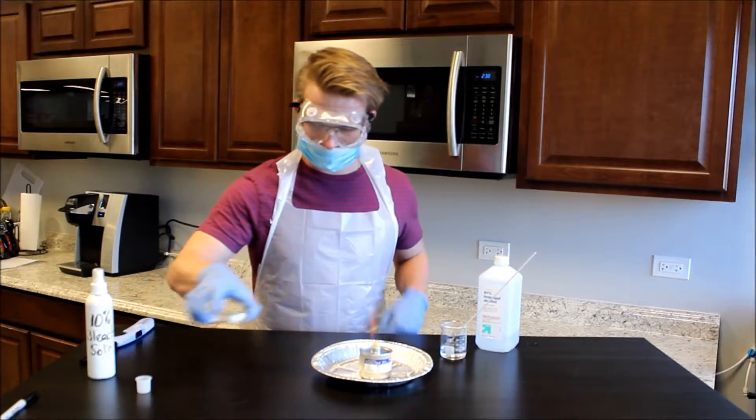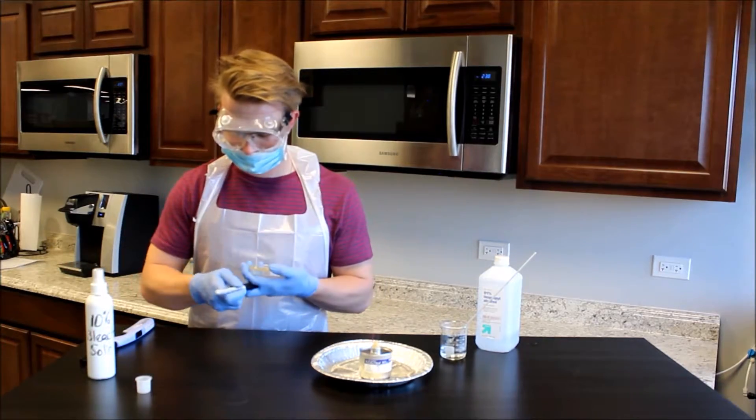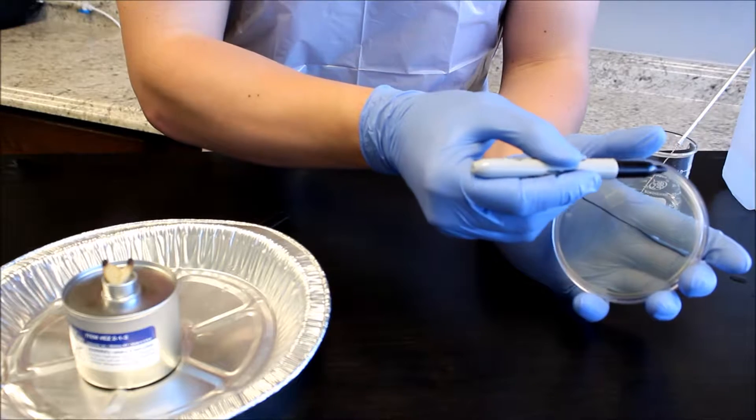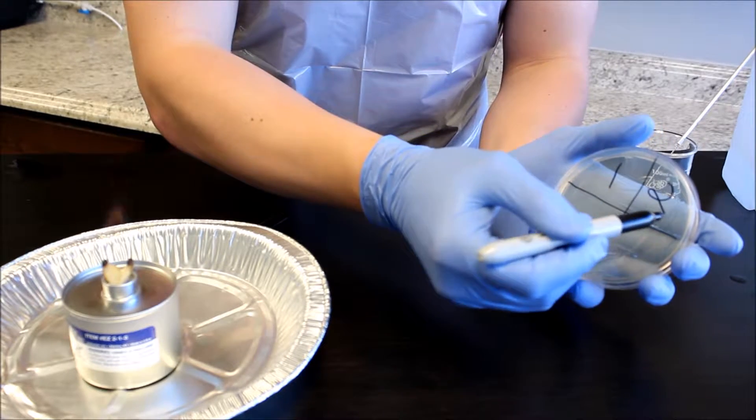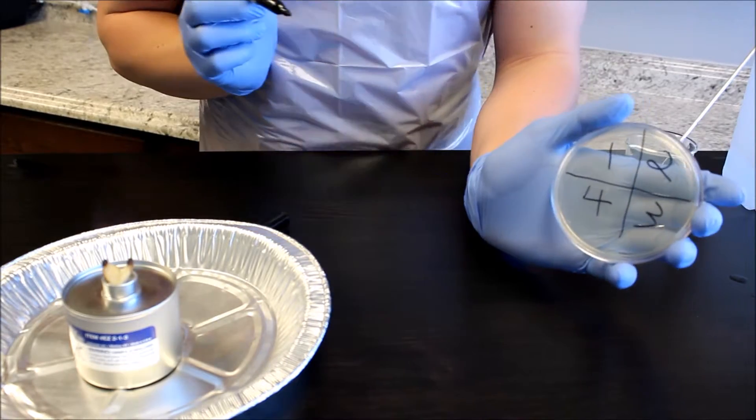Place a 90 mm TSA plate on the work space. Without opening the plate, use a permanent marker to divide the bottom agar side into 4 equal sections to illustrate quadrants for streaking. Label the quadrants 1, 2, 3, and 4.